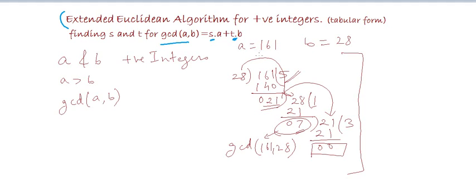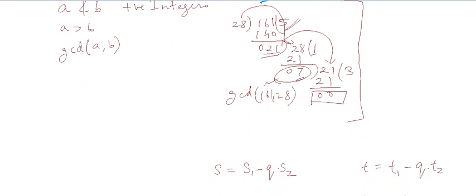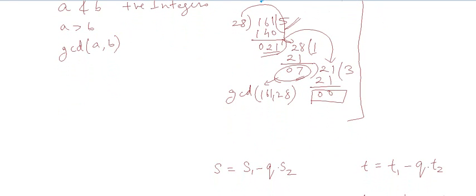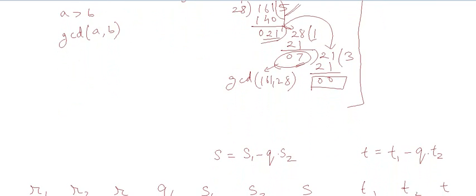For example, let us take A is equal to 161 and B is equal to 28. We already know how to find the GCD of A and B using the Euclidean algorithm, and we will see how to extend that algorithm to find the value of S and T.